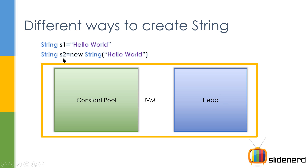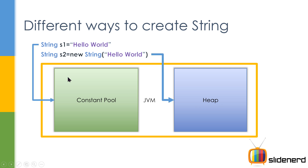The heap is where objects are actually created. For example, here you have said String S2 = new String("hello world"). When you use the operator 'new', you're actually allocating memory dynamically at runtime, so that goes inside the heap. So as I said, S1 goes into the constant pool, and S2 goes inside the heap.